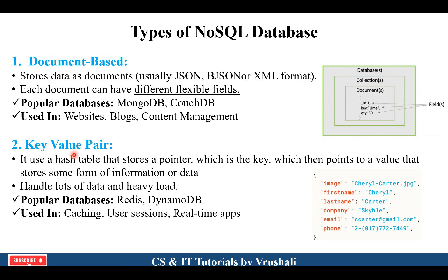The next type is called key-value pair. In this example, there is a first name — Charlie — last name, then company Skybell, their email ID and phone number. Every key has a particular value, which is called a key-value pair. By using the key, you can easily extract data from the database. Key-value pair is used everywhere in latest applications to handle large amounts of information most efficiently. You can use key-value pair in different user sessions like username, password, login credentials, or different real-time applications. Redis and DynamoDB are popular databases that support key-value pair NoSQL.